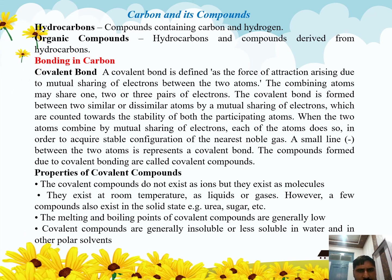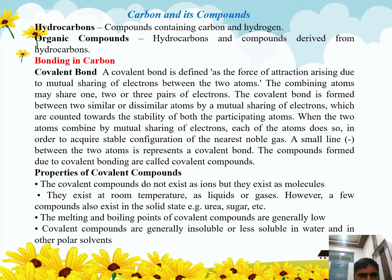Today we will discuss Class 10th Carbon and its Compounds. The first thing is hydrocarbons — compounds containing carbon and hydrogen are called hydrocarbons. Organic compounds are hydrocarbons and compounds derived from hydrocarbons, so whether they are hydrocarbons or compounds derived from hydrocarbons, we can call them organic compounds.